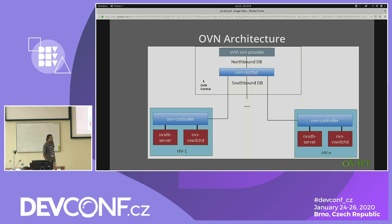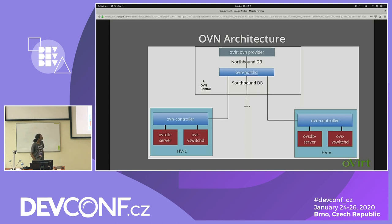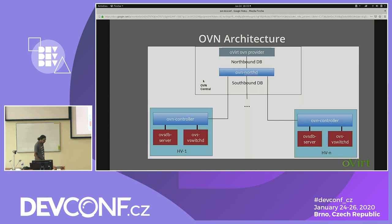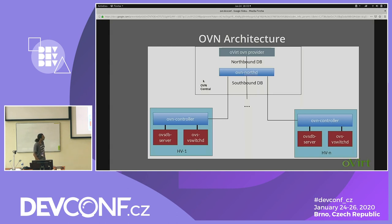The northbound database contains all virtual network configuration. It contains the information about logical switches, logical routers, ACLs, etc. — but not information about the hypervisor. The northbound database has another client, OVN Northd. OVN Northd basically translates the information in the northbound database and converts it into low-level concepts which are easier for the hypervisors to understand. The southbound database contains information about the hypervisors and the logical flows. Every hypervisor is a client of the southbound database, and there is a distributed OVN controller which runs on every hypervisor. It gets this information from the southbound database, and one of its major functions is to convert logical flows into OpenFlow.